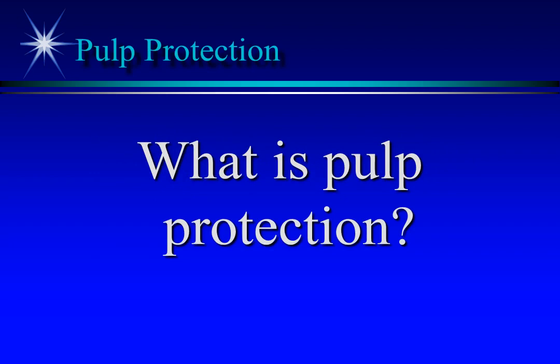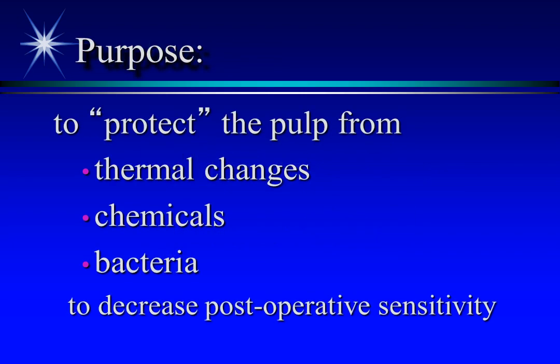What is pulp protection? Teeth are exposed to thermal changes, chemicals, and bacteria, which can lead to pain upon contacting a tooth. Pain is more likely when dentin is exposed than when enamel is intact. When detrimental, these three are referred to as insults to the pulp. Trauma can also be an insult to the pulp.